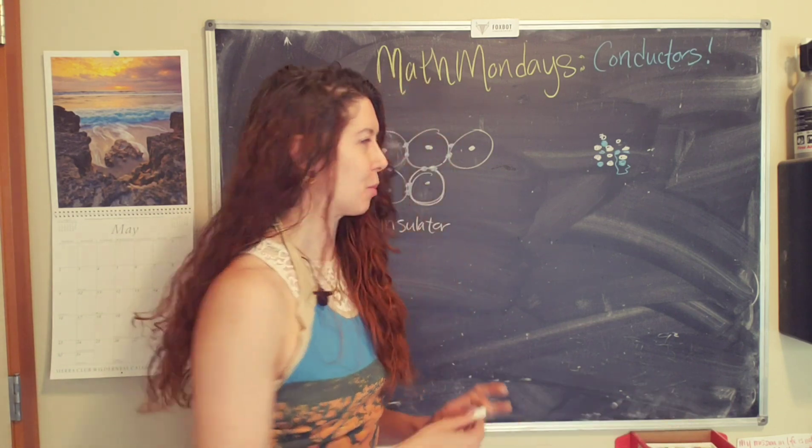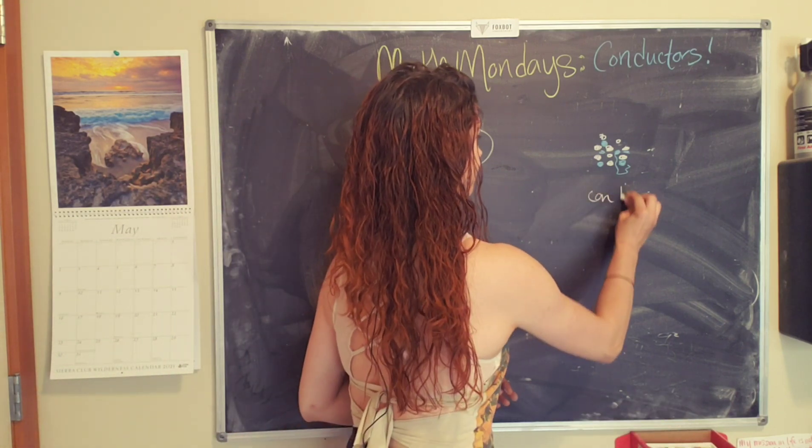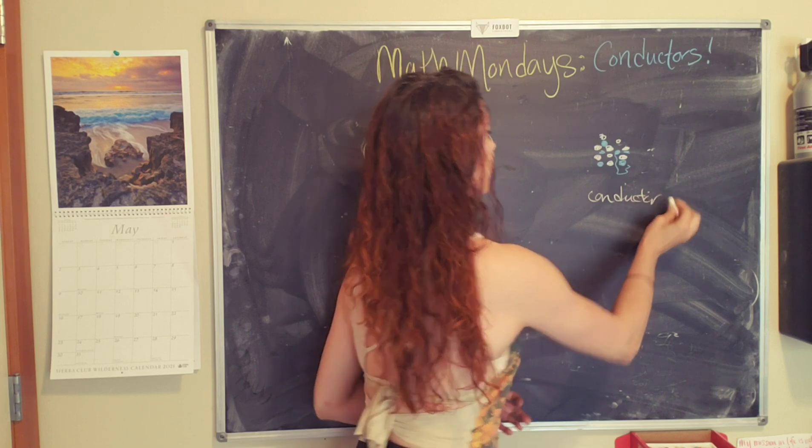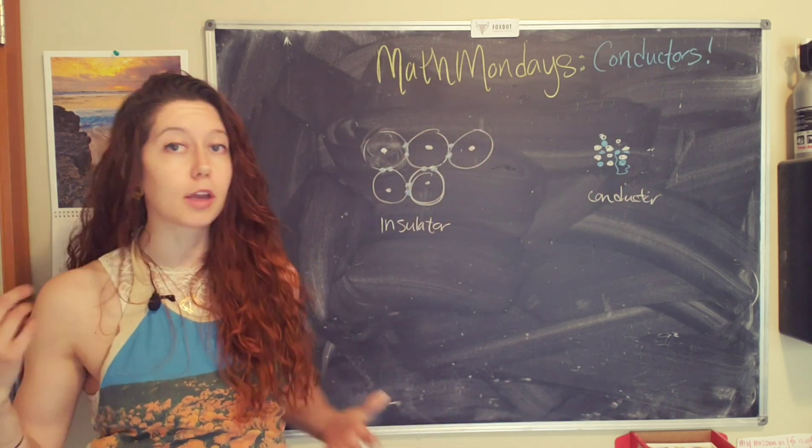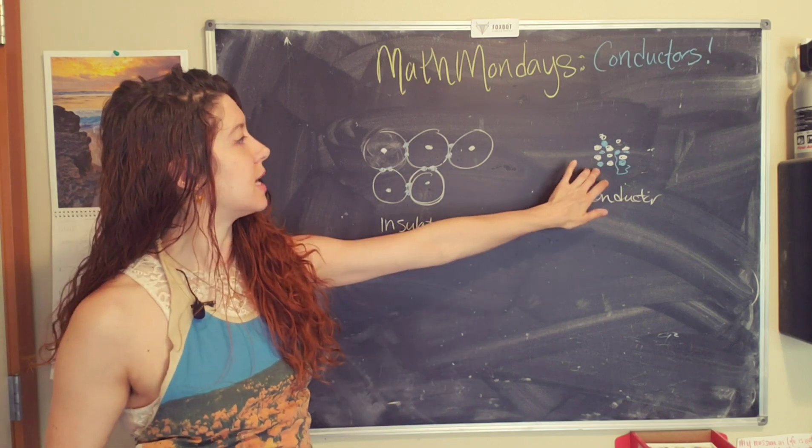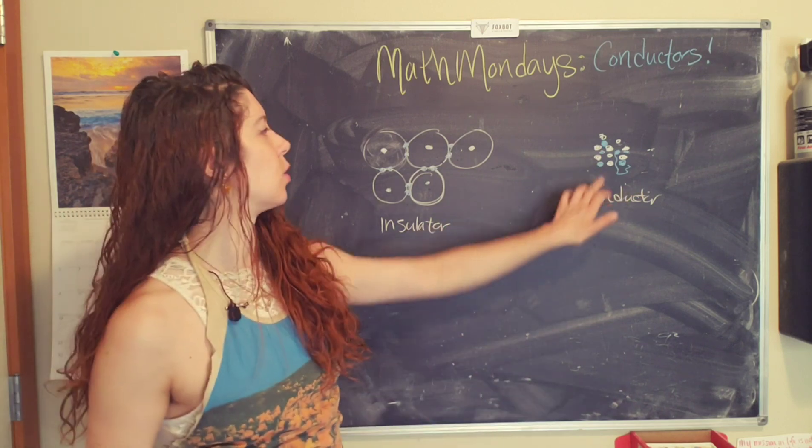And again, this is a very rough approximation. But I would definitely recommend checking out pictures of what these different atomic configurations look like, because then you're like, Oh, okay.